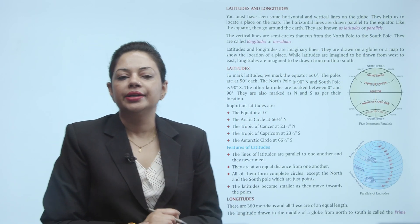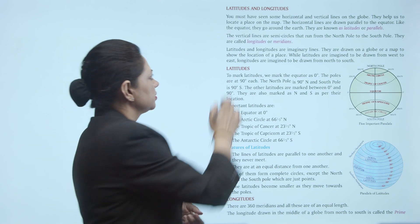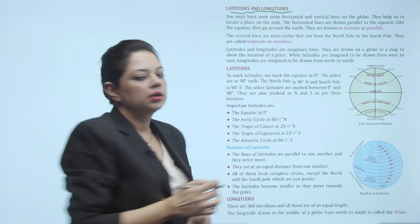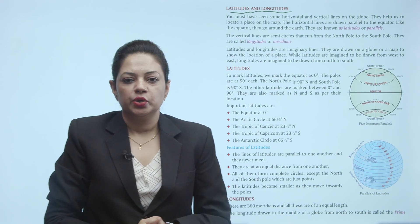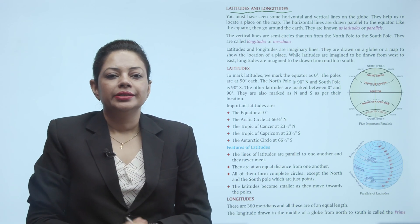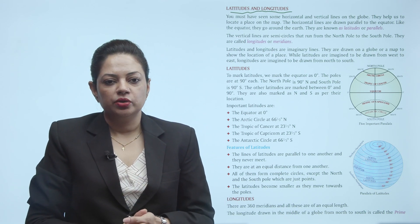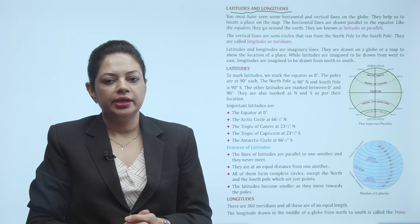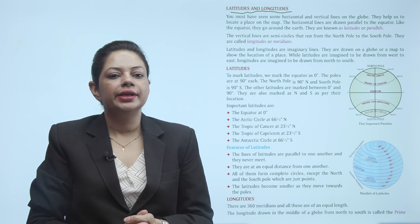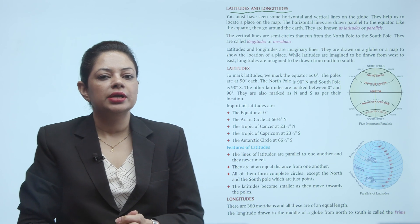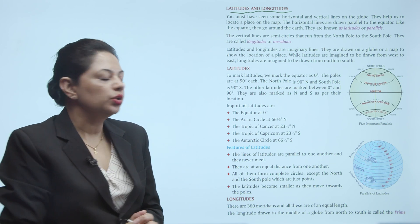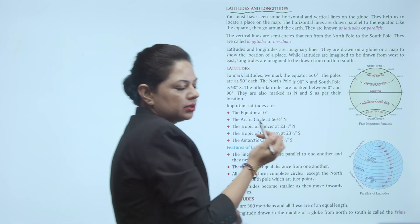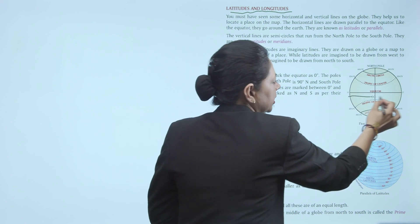Now, what are latitudes and longitudes? Latitudes help us to locate a place on the map. The horizontal lines are drawn parallel to the equator — like the equator, they go around the Earth. They are known as latitudes or parallels.